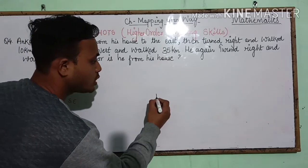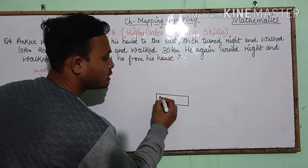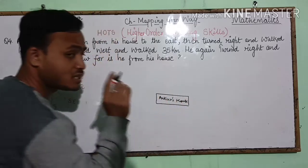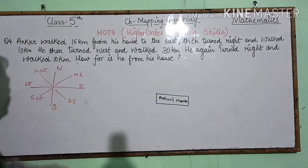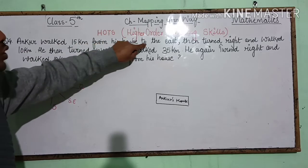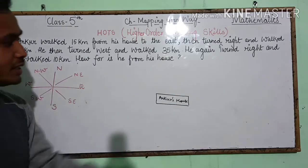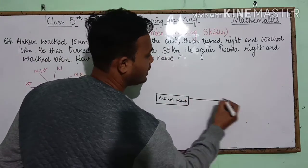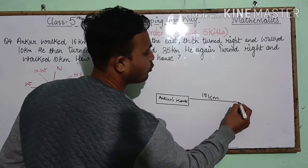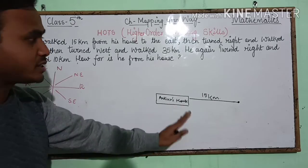This is Ankur's house. Ankur walked 15 kilometers from his house to the east side. He walked 15 kilometers and reached a point. I've placed him 15 kilometers east from his house.